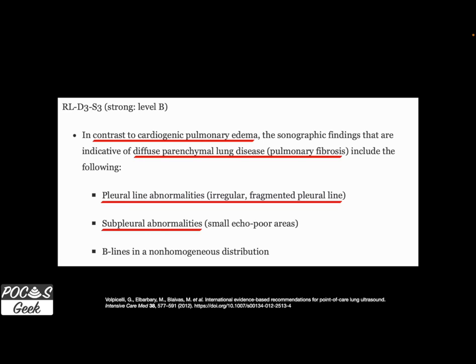One thing the guidelines didn't specifically address with irregular pleural lines and sub-pleural consolidations was metastases and masses — they address it in a different section, but findings we look at today could represent metastases. Importantly, metastases typically do not have a comet tail coming off them, which we'll discuss further.